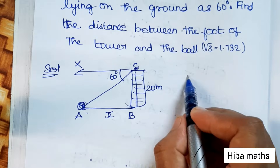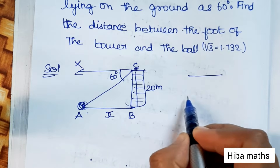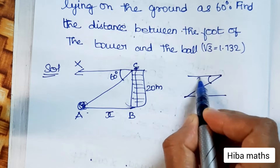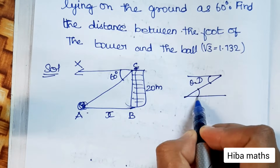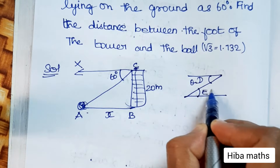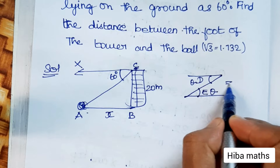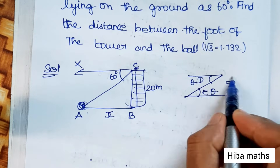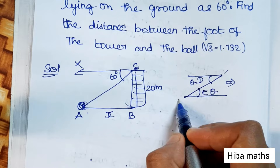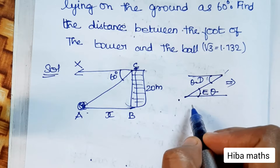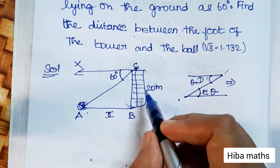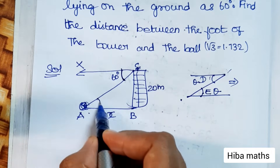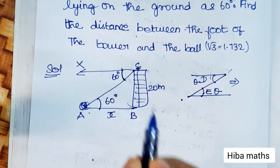Angle of depression — this is a depression angle. This is an elevation angle. This is a parallel line, and this is a transversal. Alternative angles are equal. This is the concept here. This angle is 60 degrees, so the angle of elevation is also 60 degrees.